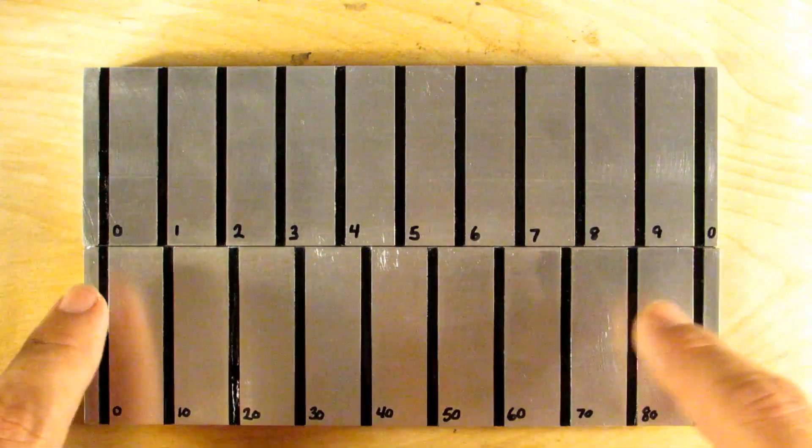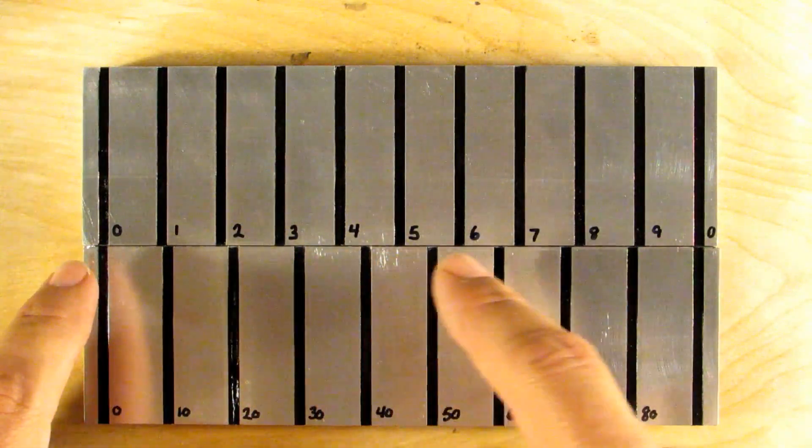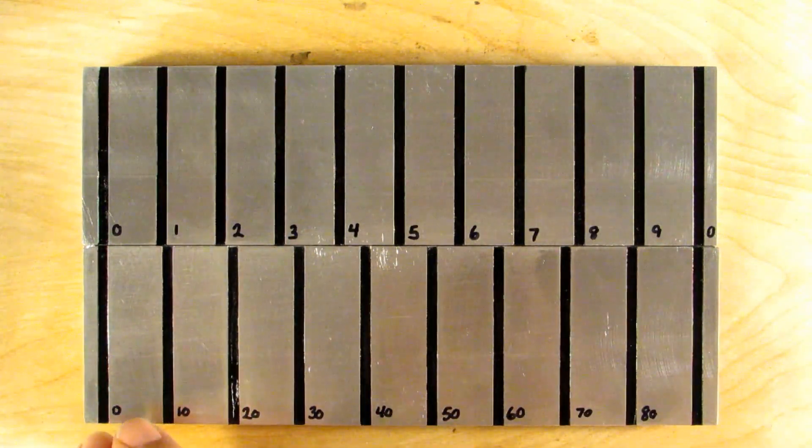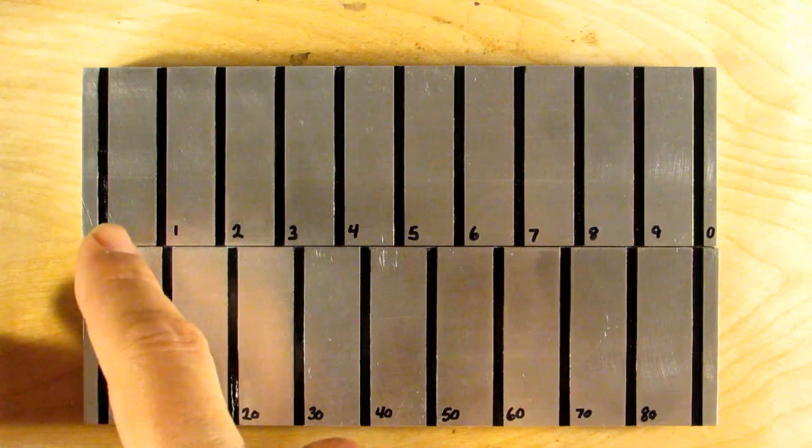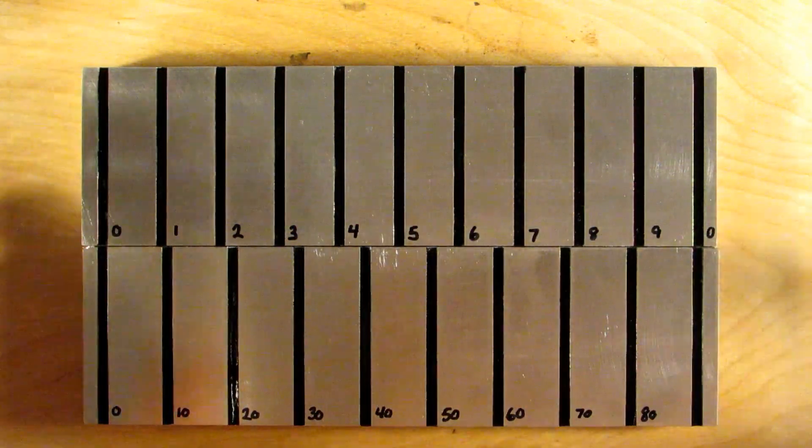So you can see right here I've written in some numbers, some graduations here. So here I've got zero, ten, twenty, thirty, so on so forth, and then zero, one, two, three, four, five, six, seven, eight, nine, and zero again.